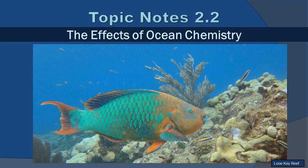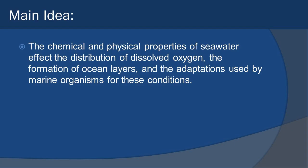We always start off with our big main idea: the chemical and physical properties of seawater affect the distribution of dissolved oxygen, the formation of ocean layers, and the adaptations used by marine organisms for these conditions.